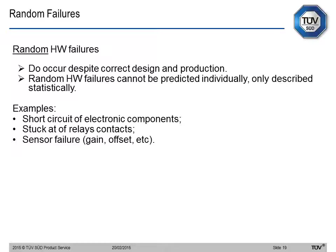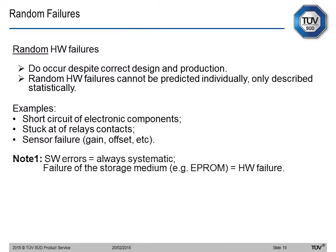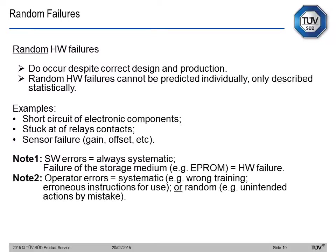There are two important notes regarding random failures. First, software errors are always systematic — there is no such thing as a random software error. If software is stored in an EEPROM and the EEPROM fails, that is a hardware failure, not a software one. Second, for operators working in manufacturing environments, operators can have both systematic failures — such as inadequate training — and random failures, such as an unintended action by mistake.